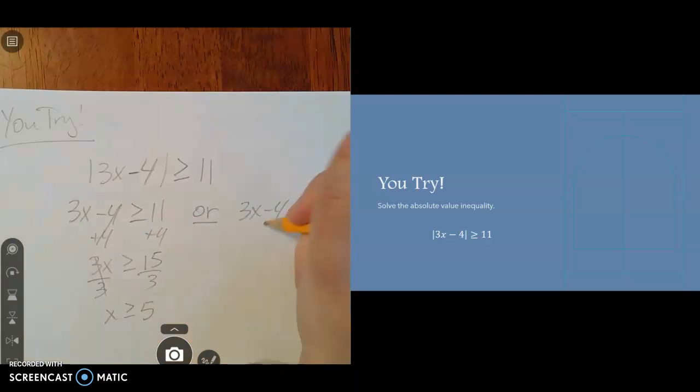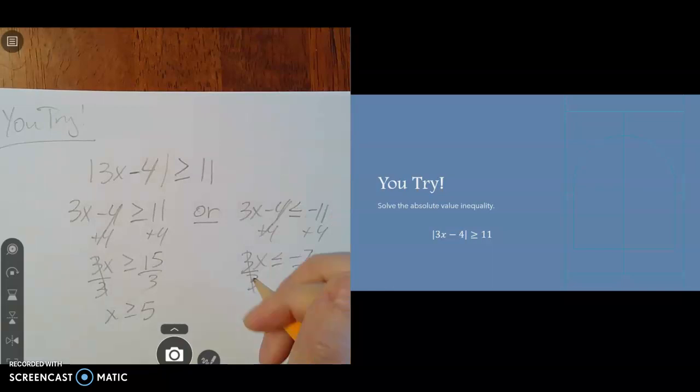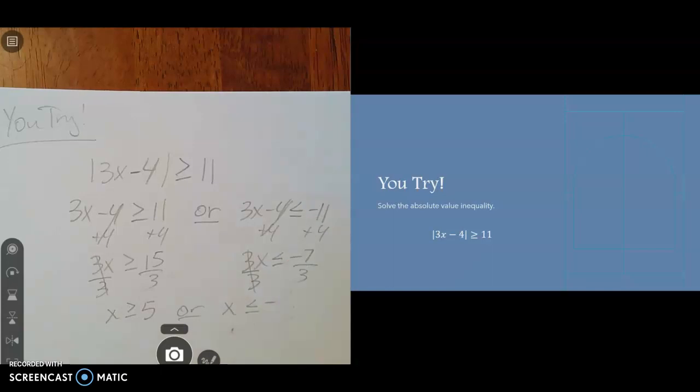On the other one, I'll add 4 to both sides. So I'll have 3x is less than or equal to negative 7. And then I'll divide both sides by 3. So my other option is x is less than or equal to negative 7 thirds. Or since I'm graphing that, let's go ahead and turn that into a mixed number. So 3 goes into 7 two times. 2 times 3 is 6, so that would have a difference of 1. So negative 2 and a third, just so we can graph it a little easier on our number line.